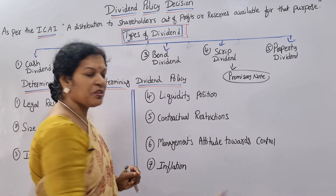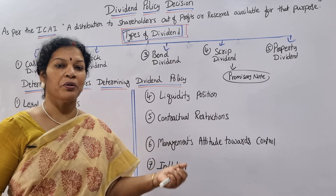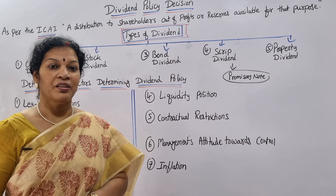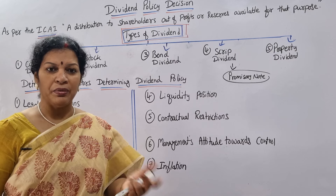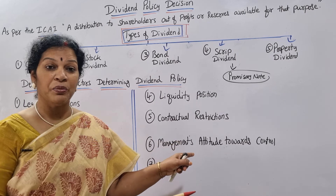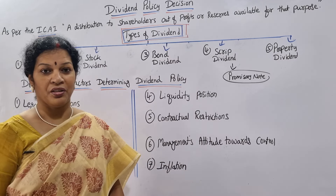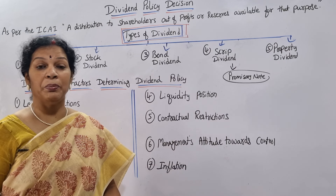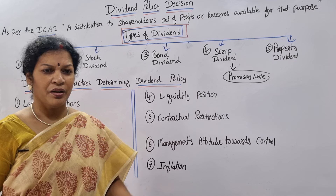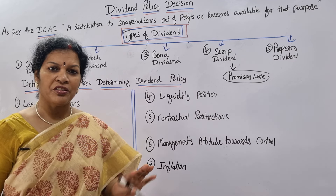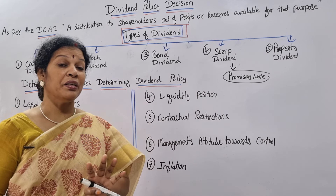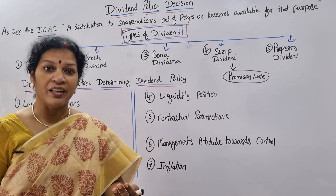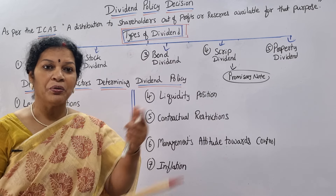The sixth factor is management's attitude towards control. Management's attitude can be different — they may want to control shareholders and finance, and may not want to distribute much dividend. Declaration of dividend depends on management. If they feel that paying dividend will make shareholders happy and increase share value, they will pay. Otherwise, if shares are already high and it makes no difference, management may stop or reduce the dividend.